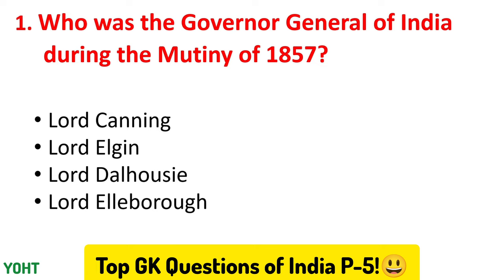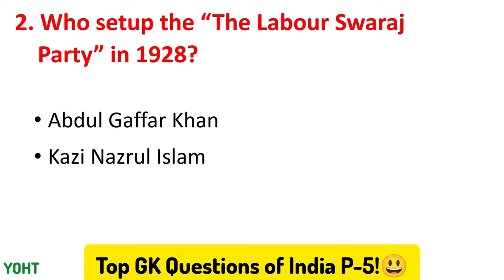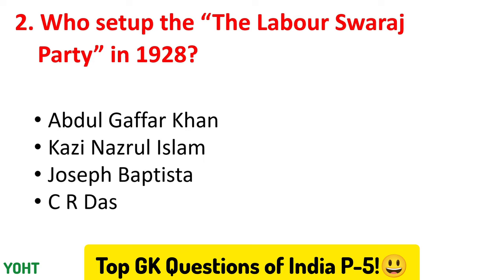Now let us see the second question. Who set up the Labour Swaraj Party in 1928? The options are Abdul Ghaffar Khan, Qazi Nizrul Islam, Joseph Baptista, and Siartas. The correct answer to this question is Qazi Nizrul Islam.